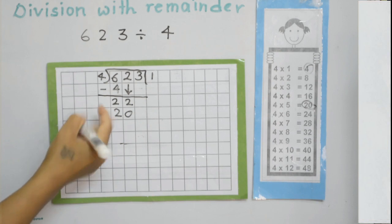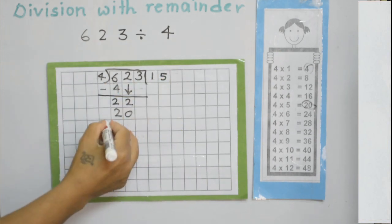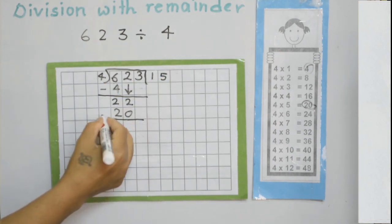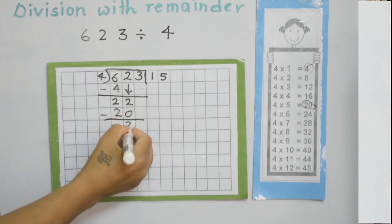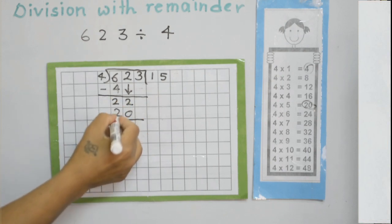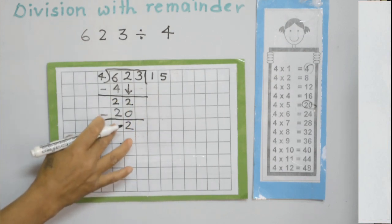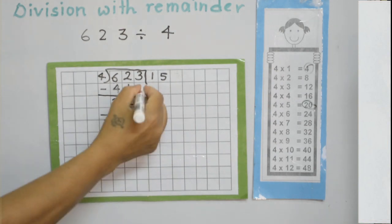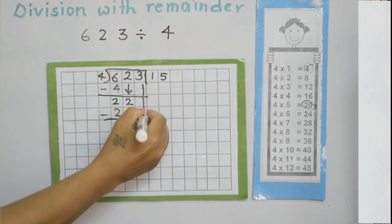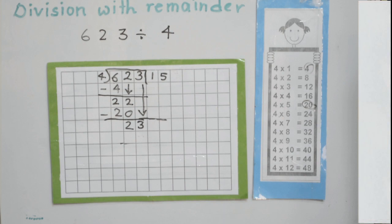4 times 5 is 20. Now subtract: 22 minus 20. 2 minus 0 is 2, and 2 minus 2 is 0. Now bring this 3 down — bring the ones digit down.